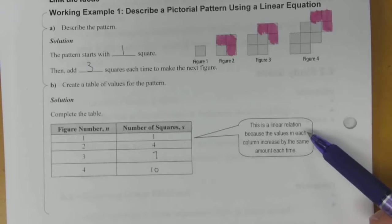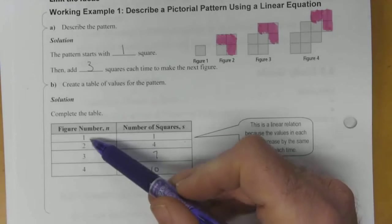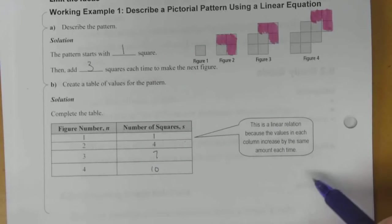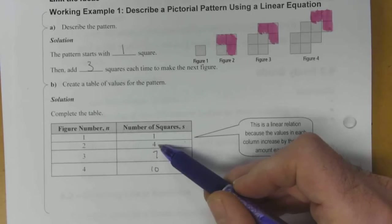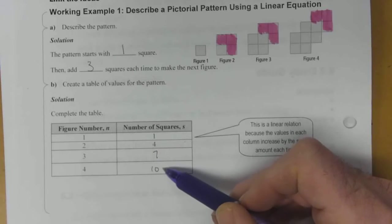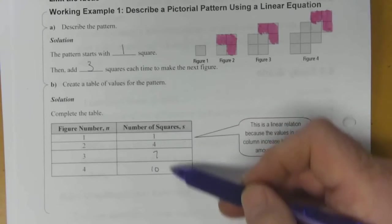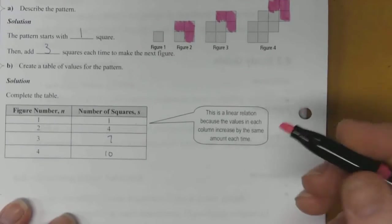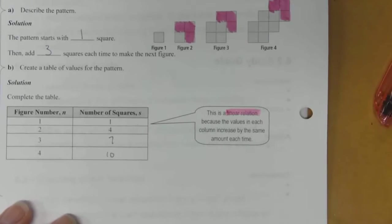This is a linear relation, and that is because the values in each column increase by the same amount each time. This column goes up by 1 — 1, 2, 3, 4 — and it potentially could keep going up by 1's. The other column goes up by 3: 1 to 4, 4 to 7, 7 to 10 — that pattern would continue as well. So this column goes up by 1 and this one goes up by 3 — that makes it linear. Linear relation is another term that you need to know.